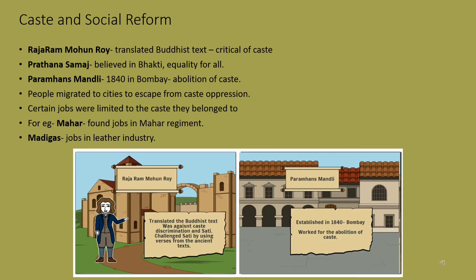Many social reformers also criticized caste inequalities. Raja Ram Mohan Roy translated an old Buddhist text which was critical of caste. The Prarthana Samaj adhered to the tradition of Bhakti, which believed in spiritual equality for all. Paramhans Mandali was founded in 1840 in Bombay to work for the abolition of caste. Christian missionaries started building schools for lower caste children. Meanwhile, the poor from villages migrated to cities to fill vacant labor positions and to escape caste atrocities in the villages.